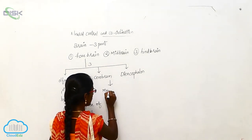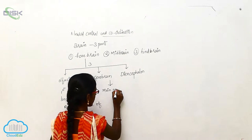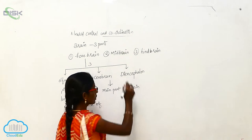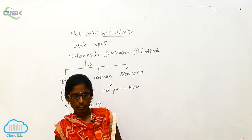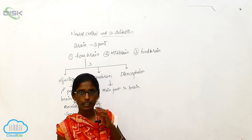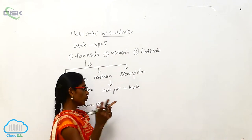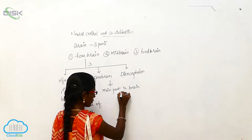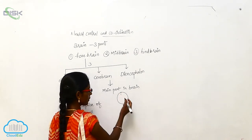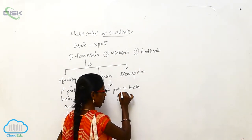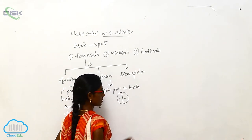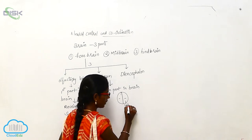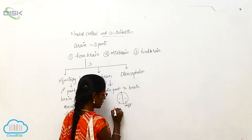The cerebrum is the main part of the brain. It is longitudinally divided into two parts: the left and right cerebrum.